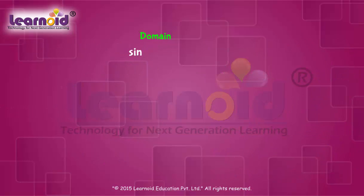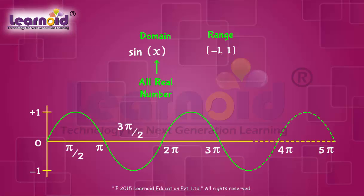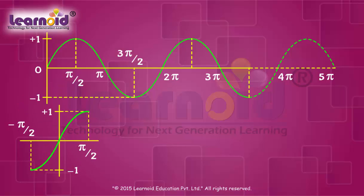Domain of sine function is the set of all real numbers. Range of sine function is the closed interval minus 1 to 1. But sine is a periodic function whose values keep repeating. For the inverse of a function we need it to be 1-1 and onto. Therefore, we restrict the domain of sine to the closed interval minus pi by 2 to pi by 2.